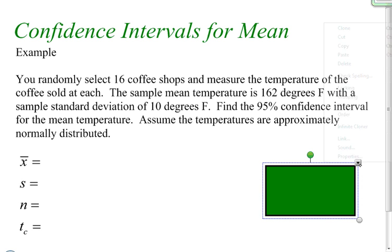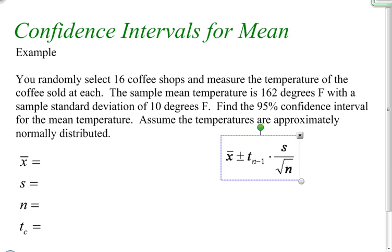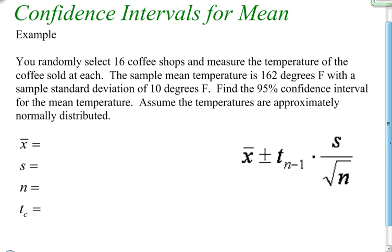First let's look at the formula to find a confidence interval for means. Here's the formula. It's got a lot of variables in it, so let's define these variables.